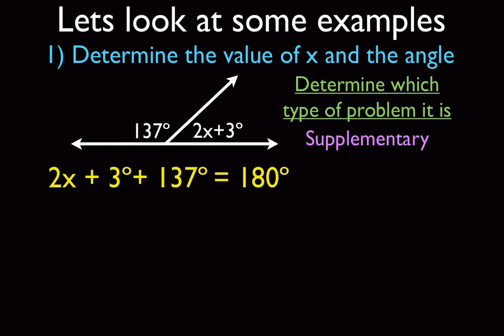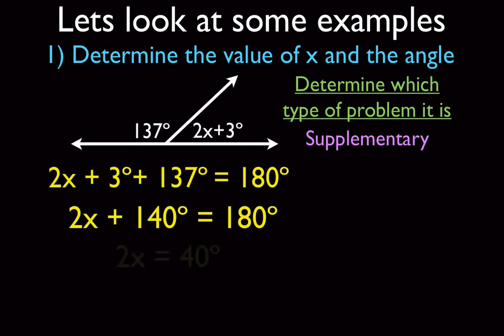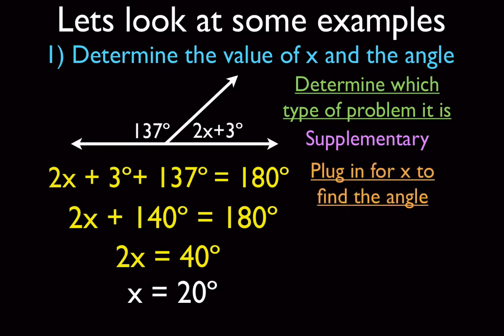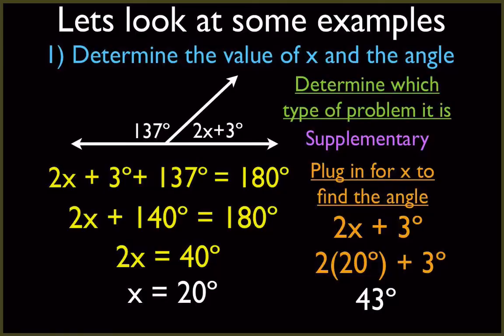The first practice problem is supplementary — S for straight line — so we set it equal to 180. The angle 2x plus 3 is on the right and 137 is on the left. Combining like terms, subtracting 140 from both sides, and dividing by 2 gives x equals 20. But the answer is not just 20 — I have to plug that back in. Taking 2x plus 3 with x equals 20: 2 times 20 is 40, plus 3 is 43 degrees. That's the actual angle measure.